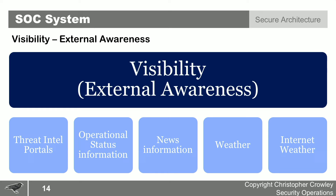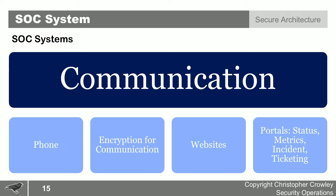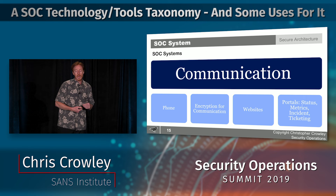The overall categories are: visibility and external awareness — using technology to show analysts the state of the environment, including weather and internet weather. When new threats emerge or nation-state tools get dumped on the internet, you need to maintain that visibility, whether through Twitter feeds or dedicated tools. Communication technology also forms a key category.